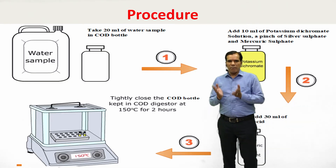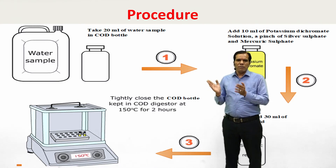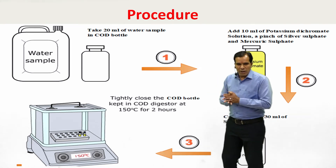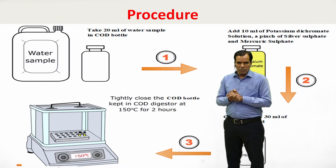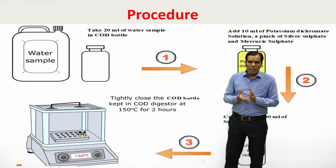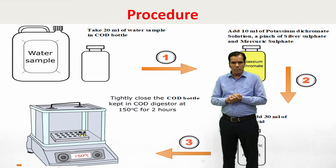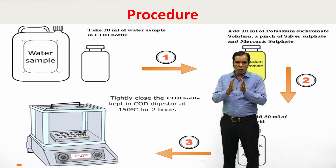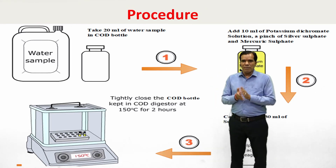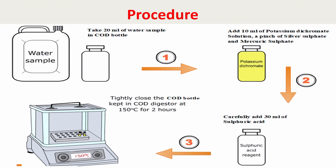For the procedure: collect a water sample from a river, industrial area, or pond. Take 20 ml of water sample in a COD bottle. Add 10 ml of potassium dichromate solution, a pinch of silver sulfate and mercuric sulfate. Then carefully add 30 ml of concentrated sulfuric acid for acidification of the solution.